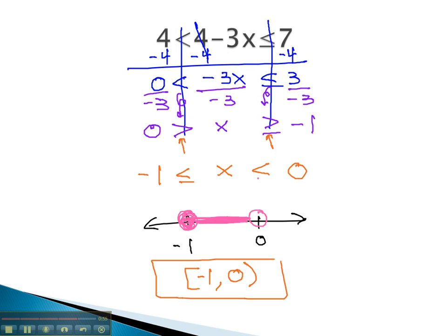Tripartite inequalities simply have three parts, and we must balance all three parts as we isolate the variable in the middle.